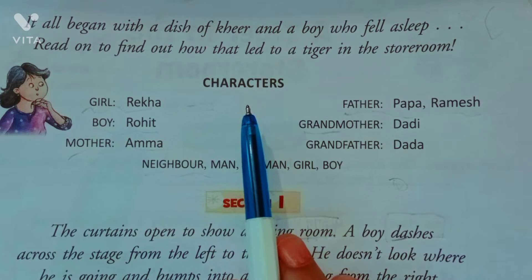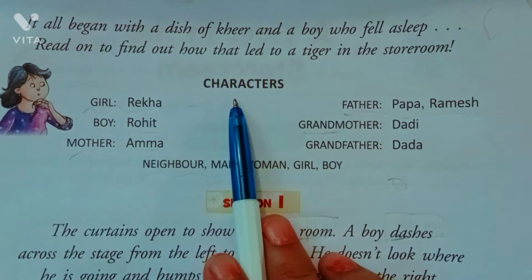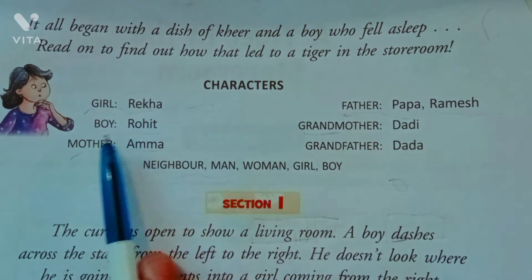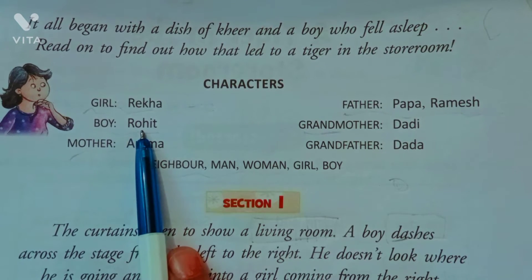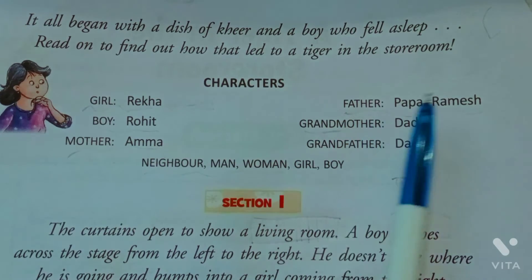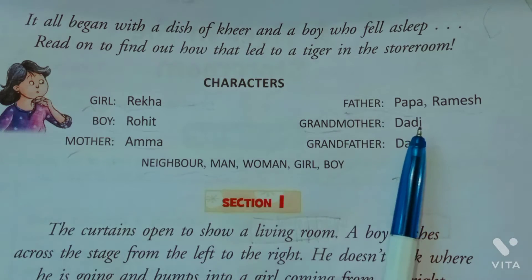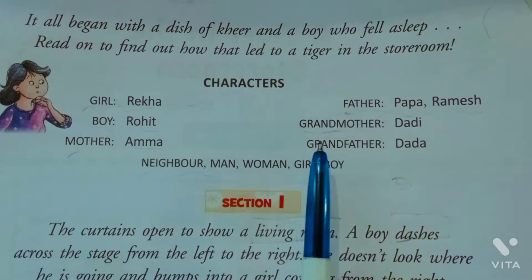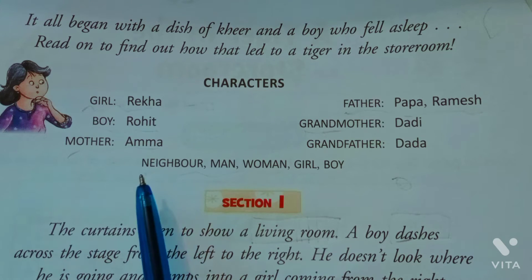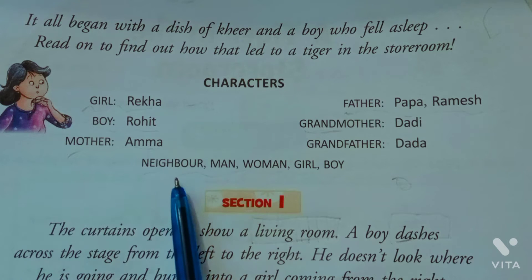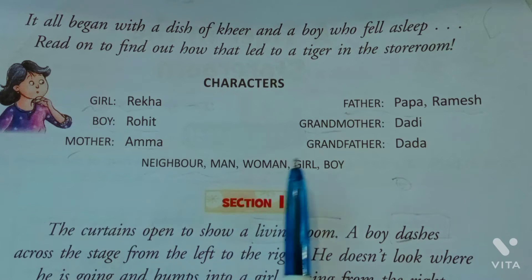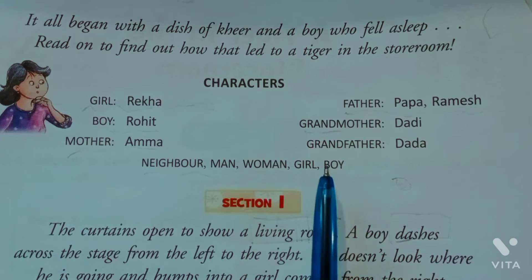Is story mein characters kaun kaun se hain? First one is a girl, uska naam hai Rekha. Second one is a boy, uska naam hai Rohit. Mother — Amma. Father — Ramesh. Grandmother — Dadi. Grandfather — Dada. Aur neighbor bhi hain — neighbor ka matlab hota hai padosi, jo hamare ghar ke bilkul nazdik rehte hain. Men, women, girl, aur boy bhi hain.